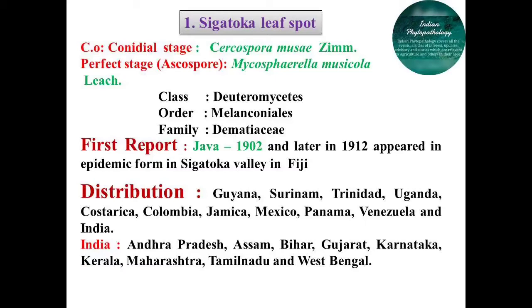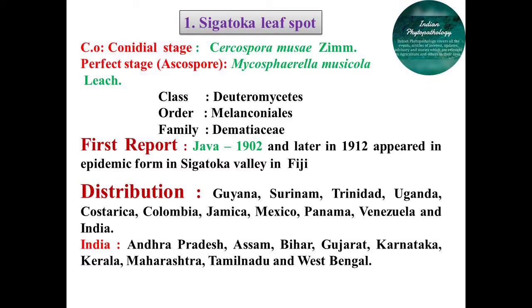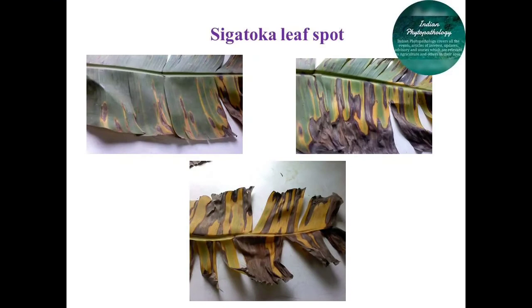We will see Sigatoka leaf spot first. The causal organism is Cercospora musae and its perfect stage is known as Mycosphaerella musicola. It comes under the class Deuteromycetes. Under the classification of Ainsworth (1973), this Sigatoka disease was first reported in Java in 1902.